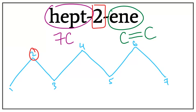Let's get rid of these numbers and add the second bond between the second and the third carbon. This is the double bond added between the second and the third carbon. This is the structure for hept-2-ene.